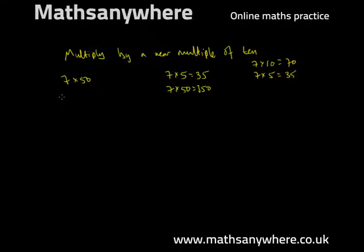A near multiple of 10 could be 51. 5 times 10 is 50 plus 1 to make it a near multiple is 51. 7 times 51. We can break this down into it being the same as 7 times 50 plus 7 times 1.